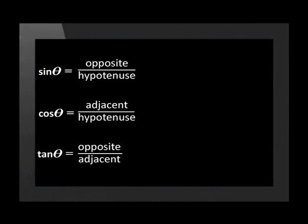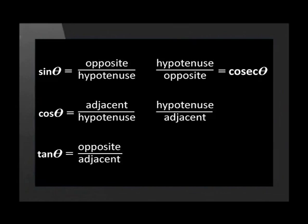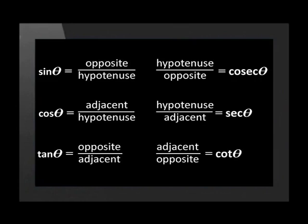But how does this apply to trigonometry? Remember that sine, cos, and tan are all ratios. The reciprocal of sine theta would be equal to the hypotenuse over the opposite side. The reciprocal of cos theta would be equal to the hypotenuse over the adjacent side. This is given the name sec. The reciprocal of tan theta would be equal to the adjacent over the opposite side. This is given the name cot.